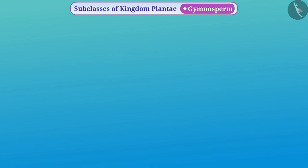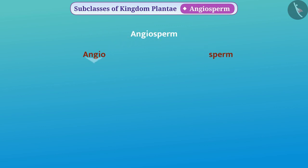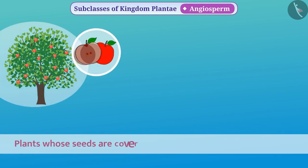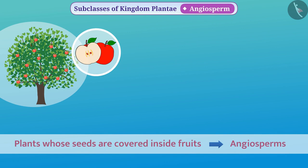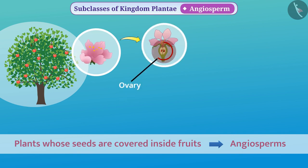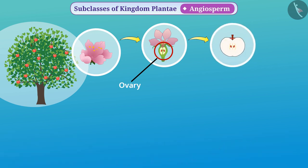Now let's understand angiosperms. The word angiosperm is made up of two Greek words: 'angio' meaning covered, and 'sperm' meaning seed. Plants whose seeds are covered inside fruits are called angiosperms. The main feature of these plants is the presence of flowers. Their seeds develop in the ovaries of flowers, which later take the form of fruits. Hence we also call these plants flowering plants.